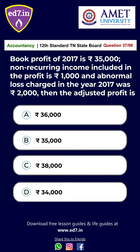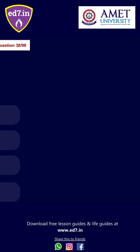Question No. 37: Book profit of 2017 is Rs. 35,000. Non-recurring income included in the profit is Rs. 1,000 and abnormal loss charged in the year 2017 was Rs. 2,000. Then the adjusted profit is — Option A: Rs. 36,000. The answer is Option A — Rs. 36,000.